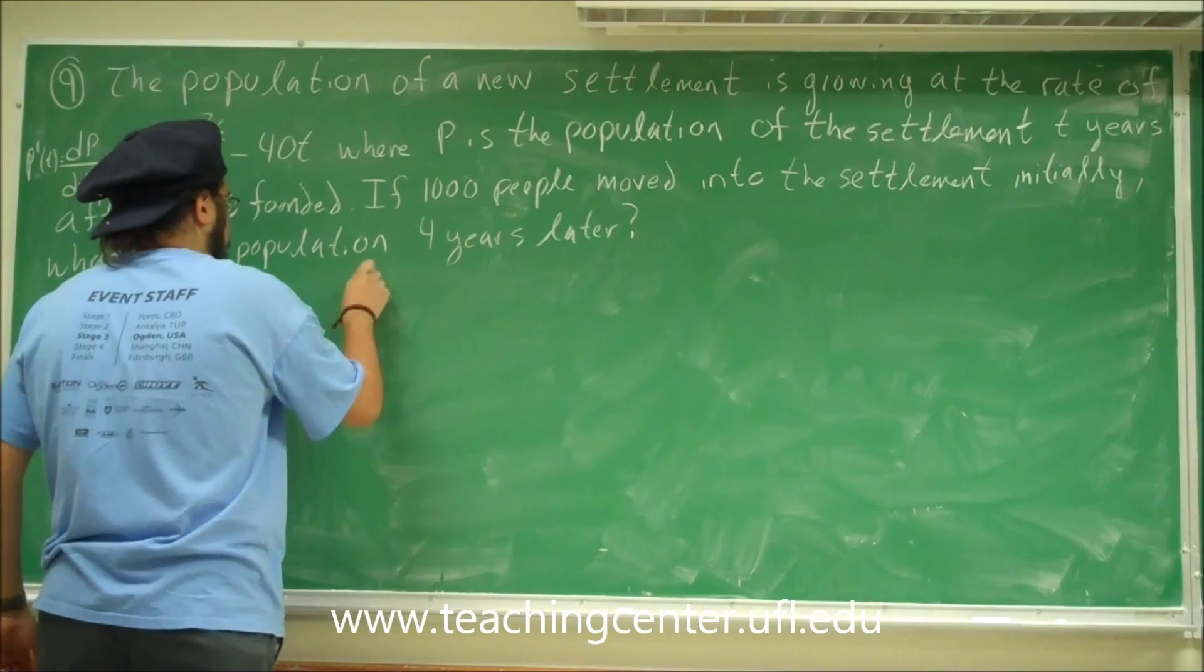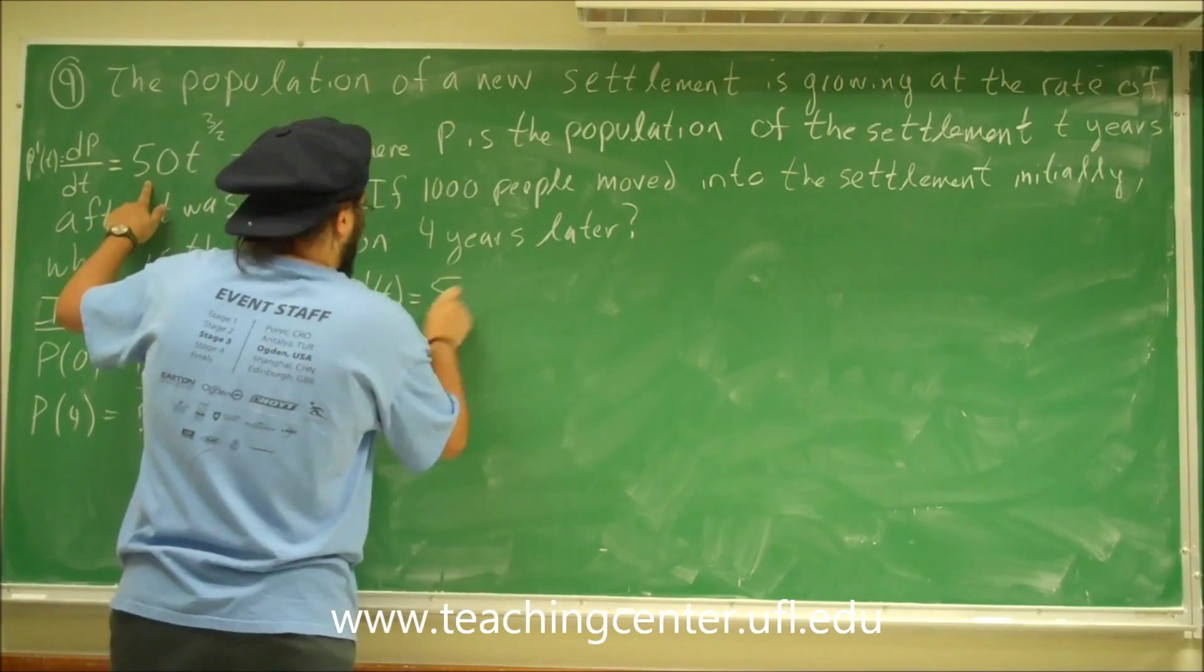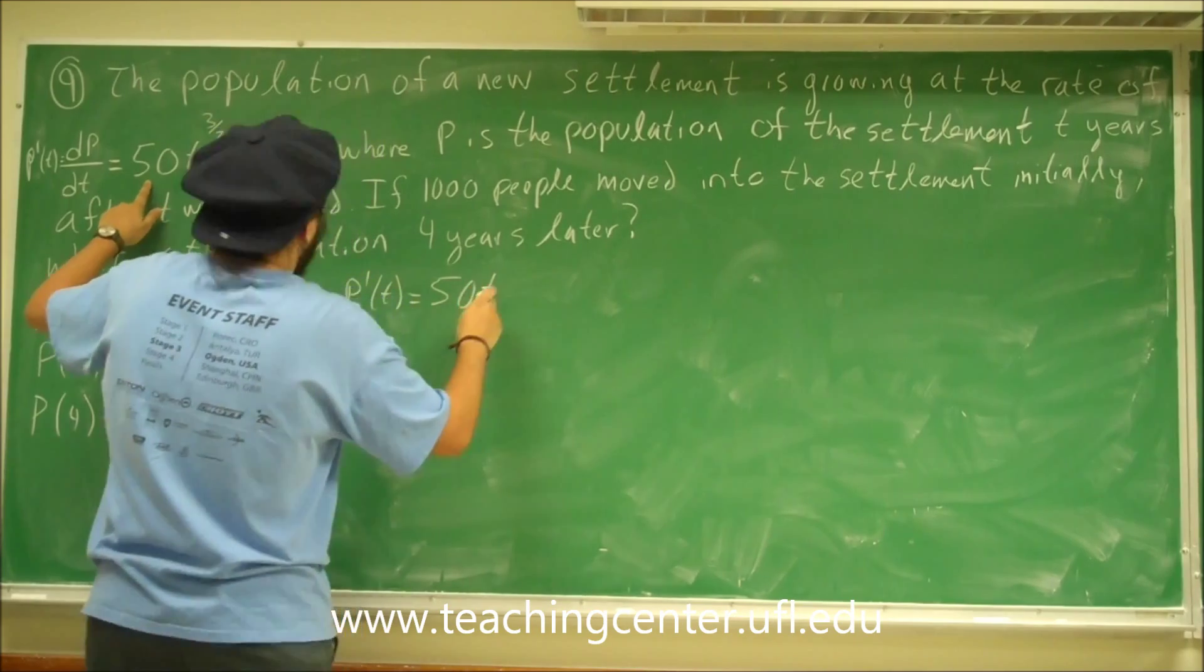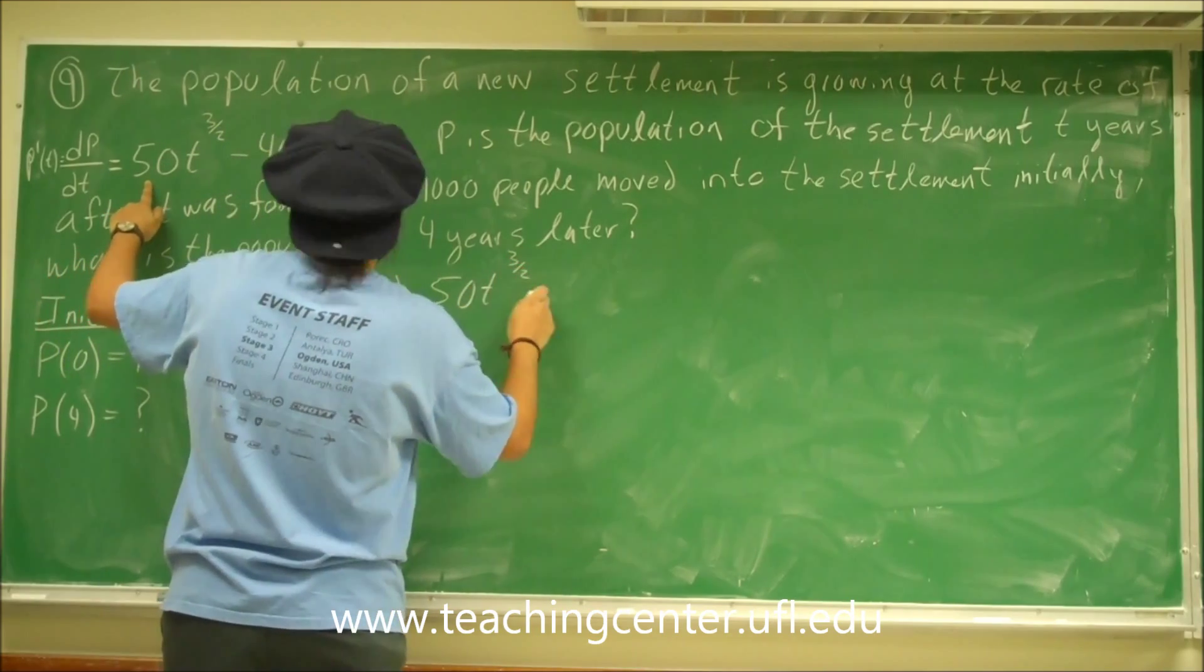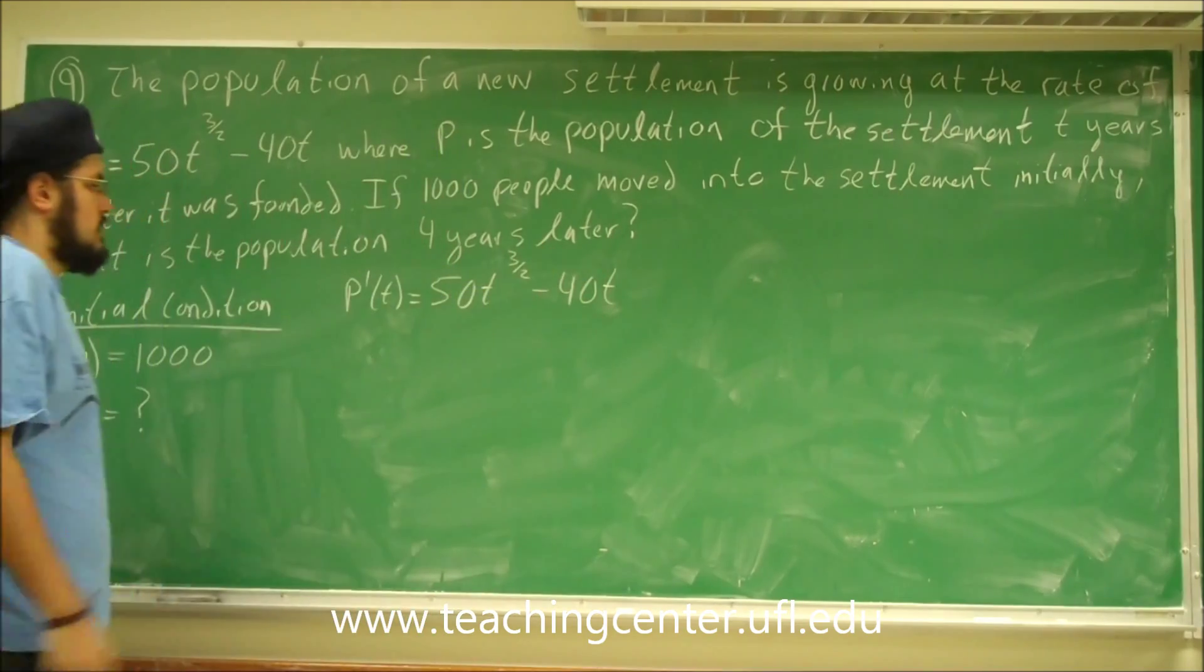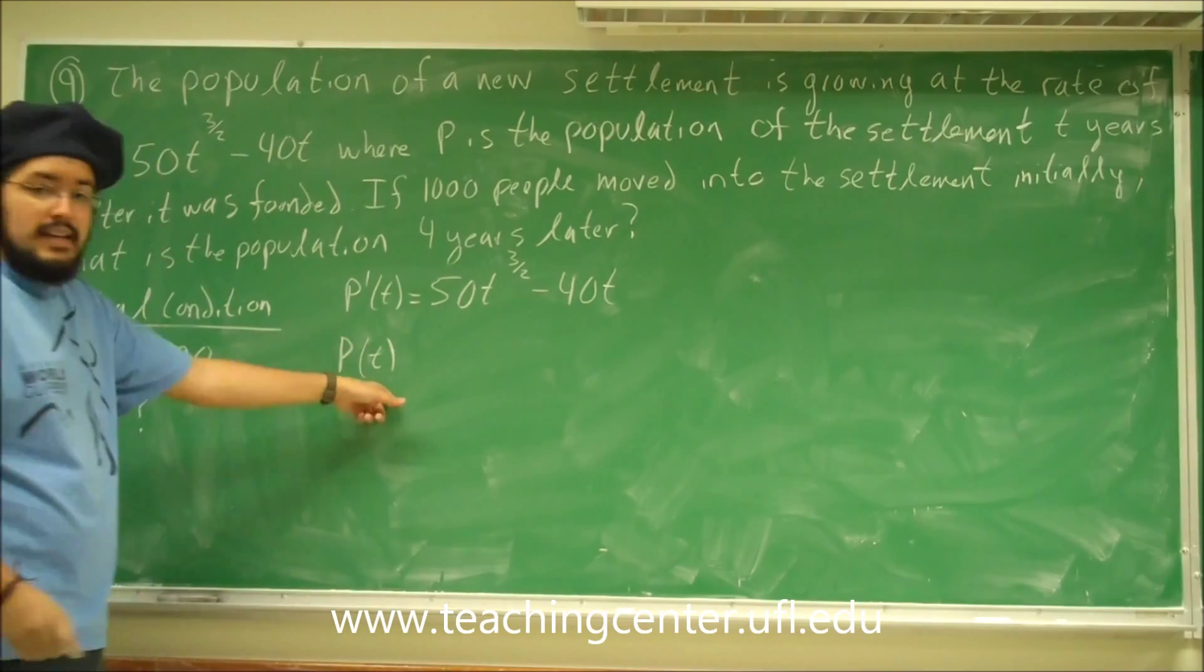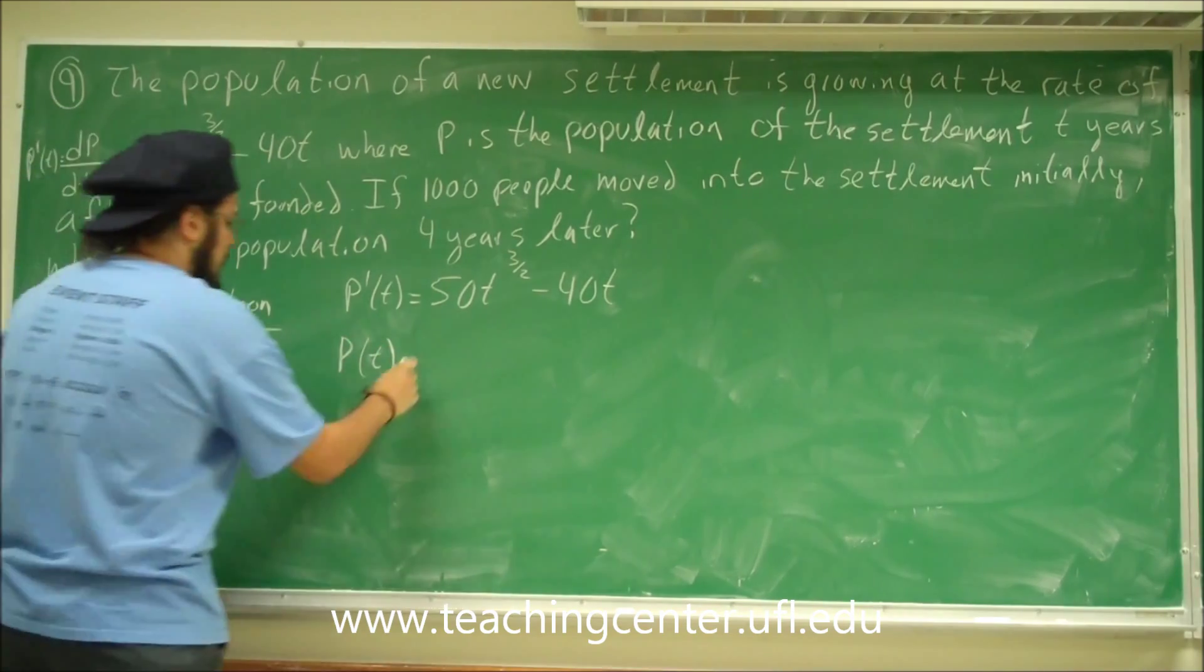We have p(t), so p prime of t. Let's rewrite this. p prime of t is 50t to the 3 halves minus 40t. So how do we take the antiderivative of this? If we take the antiderivative of this, we're going to get the function p(t), and that's exactly what we want.